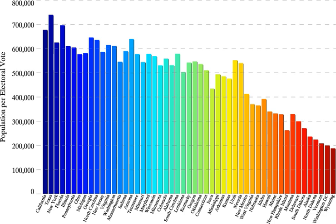Under the current system, campaign focus in terms of spending, visits, and attention paid to regional or state issues, is largely limited to the few swing states whose electoral outcomes are competitive, with politically solid states mostly ignored by the campaigns. The adjacent maps illustrate the amount spent on advertising and the number of visits to each state, relative to population, by the two major party candidates in the last stretch of the 2004 presidential campaign.